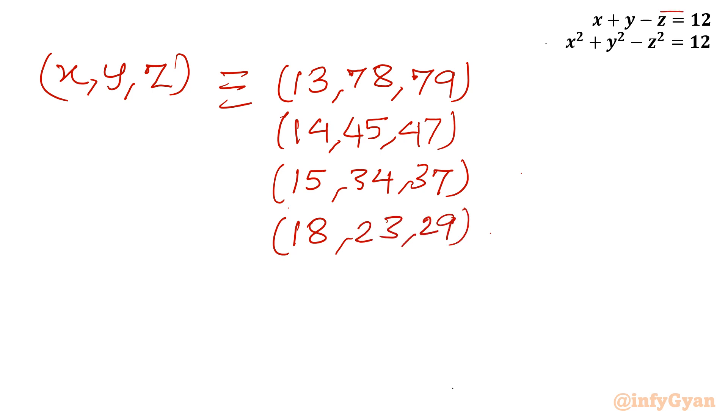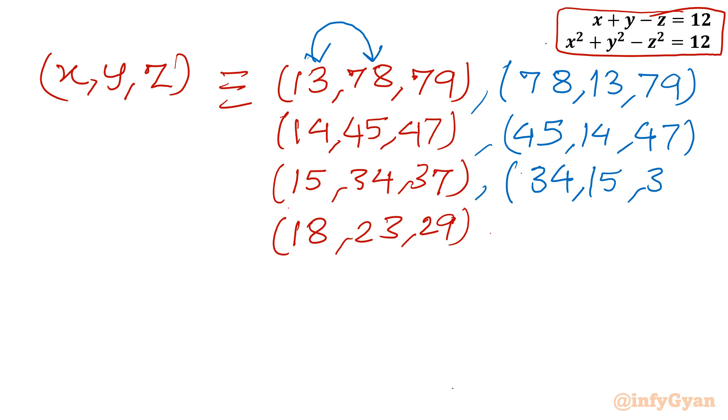Now because equations are symmetrical with respect to x and y, then our answer will be swapped in terms of x and y values. So I will write another 4 triplets. That would be 78, 13, 79. Here I will write 45, 14, 47. Here I will be writing 34, 15, 37. And last triplet I will write 23, 18, and 29.